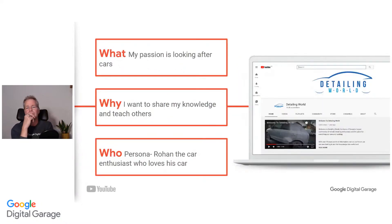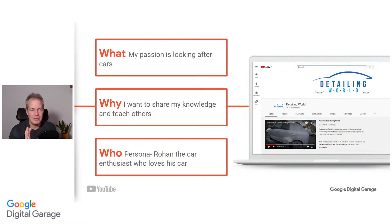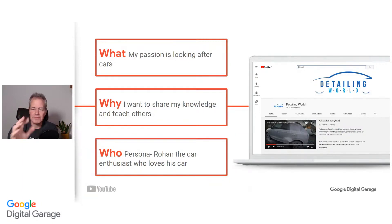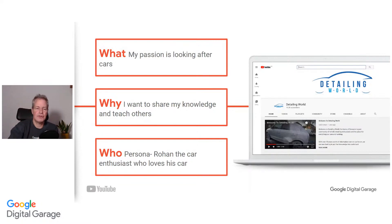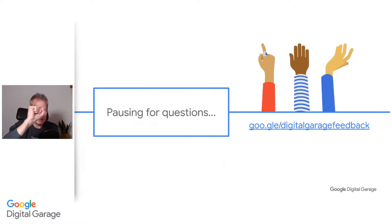So to summarize: what — my passion is looking after cars; why — I want to share my knowledge and teach others; who (persona) — Rohan, the car enthusiast who loves his car. Work out these different things and be as clear as possible.